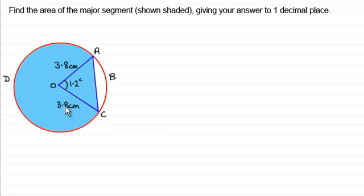So the slightly longer method is going to be where I'm going to be working out the area of the sector OABC. I'm then going to work out the area of the triangle OAC, subtract it from the area of the sector and that will give me the area of the minor segment shaded here in white. And then I can take away this area from the circle and that will give me the area of the major segment.